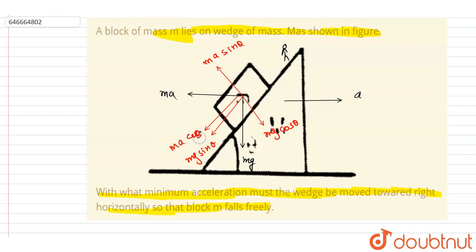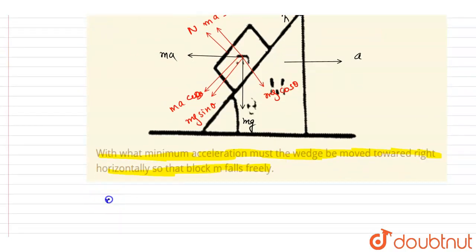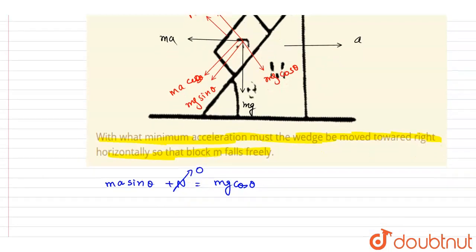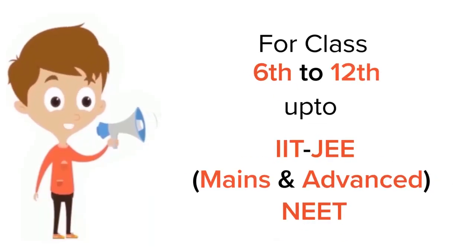We want the normal reaction to be zero. So we write the equation: ma sinθ + N = mg cosθ. We want it to fall freely, so for that the normal reaction should be zero. Setting N = 0, m and m get cancelled out, and we get: a = g cotθ. And this is the answer.